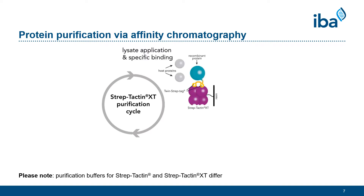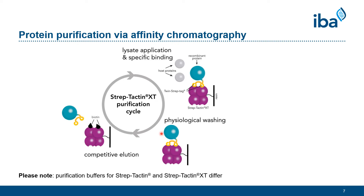As an example, I will guide you through the purification cycle of Streptactin XT. The first step is the application of your lysate — your target protein binds to the ligand, as you can see here, but all other host proteins are also present. To remove them, a physiological washing step follows. Then the competitive elution follows: when working with Streptactin XT, an elution buffer containing biotin is applied. Since biotin is added in excess, it will replace the target protein and the protein is eluted in a very specific way. Because of differences in the biotin binding pocket between Streptactin and Streptactin XT, different elution buffers are required. After your protein of interest has been purified, it is ready for further downstream applications. No removal of the peptide tag is required, because they are composed of balanced amino acid sequences and the protein structure or activity is not influenced.